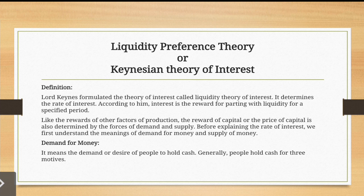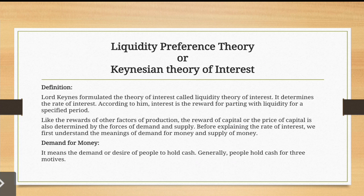The compensation the lender receives for giving up use of money is called interest. So, interest is the reward of the lender for parting with liquidity. Because the lender is saying: I will not use this one lakh rupees for a specified period — two years, as in our example — and in return you will pay me twenty percent per annum. That twenty percent is the interest.